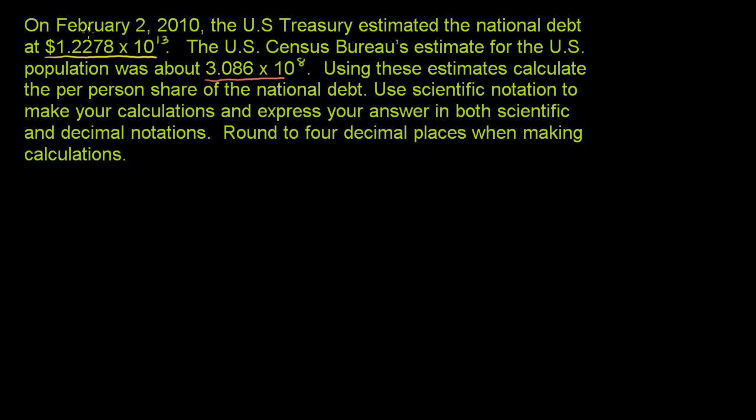So essentially, we want to take the entire debt and divide by the number of people. That'll give us the per person share of the national debt. Use scientific notation to make your calculations and express your answer in both scientific and decimal notations, which means just as a regular number. Round to four decimal places while making calculations. So we want the per person debt.